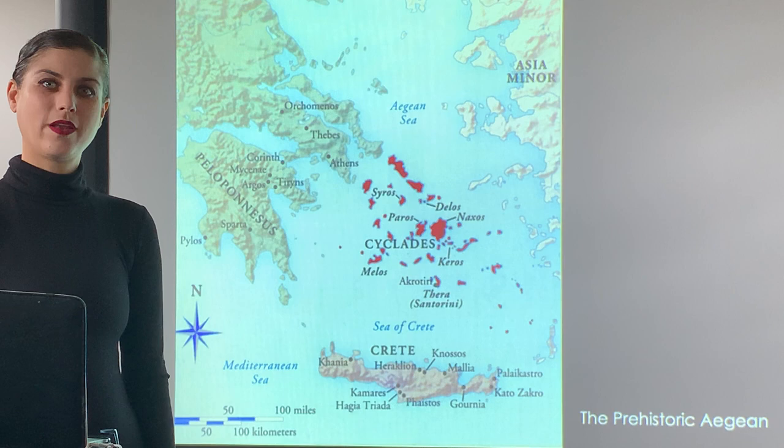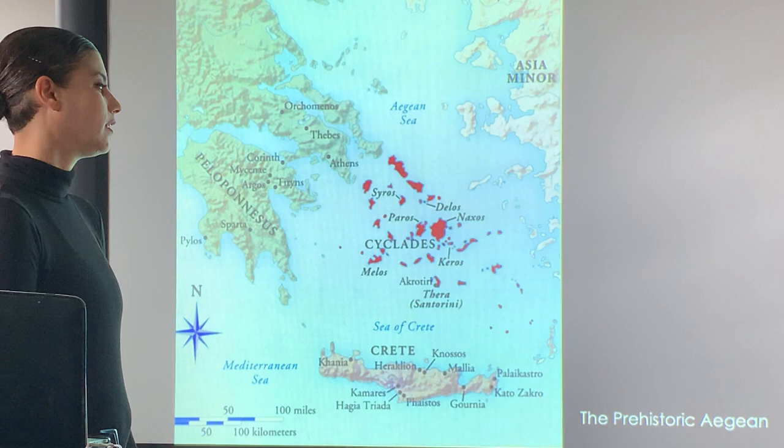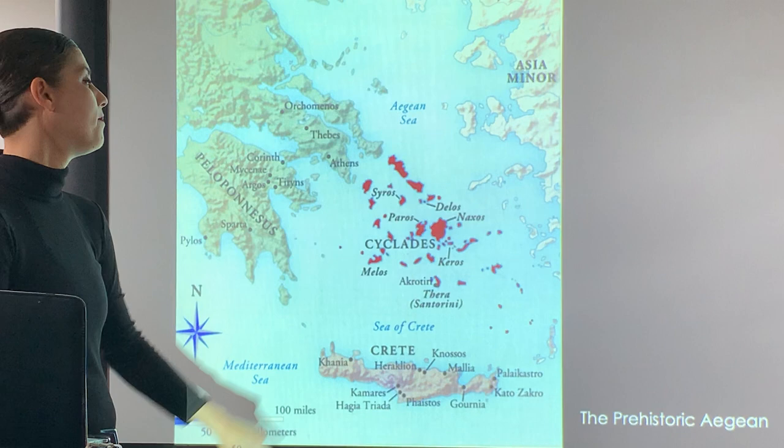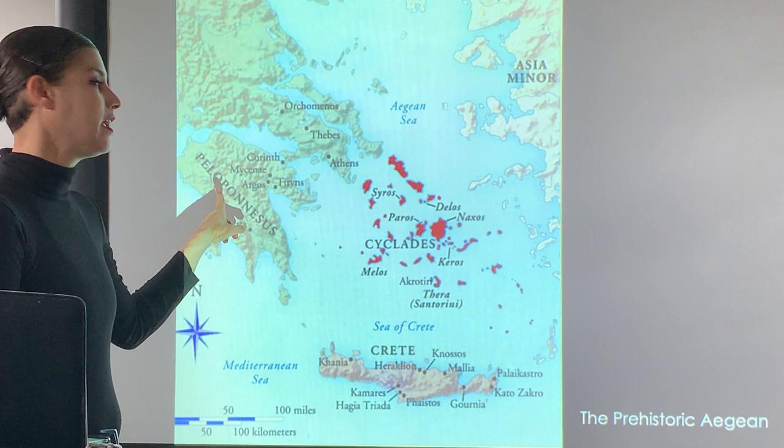Hello and welcome to today's lecture on the Ancient Aegean. We're traveling to some of the Greek islands today and going to study three different geographical locations: artwork made at the Cyclades in the Cycladic Islands, art made on the island of Crete called Minoan Art, and art made on the Greek mainland known as Mycenaean art, especially at the Fortress of Mycenae.